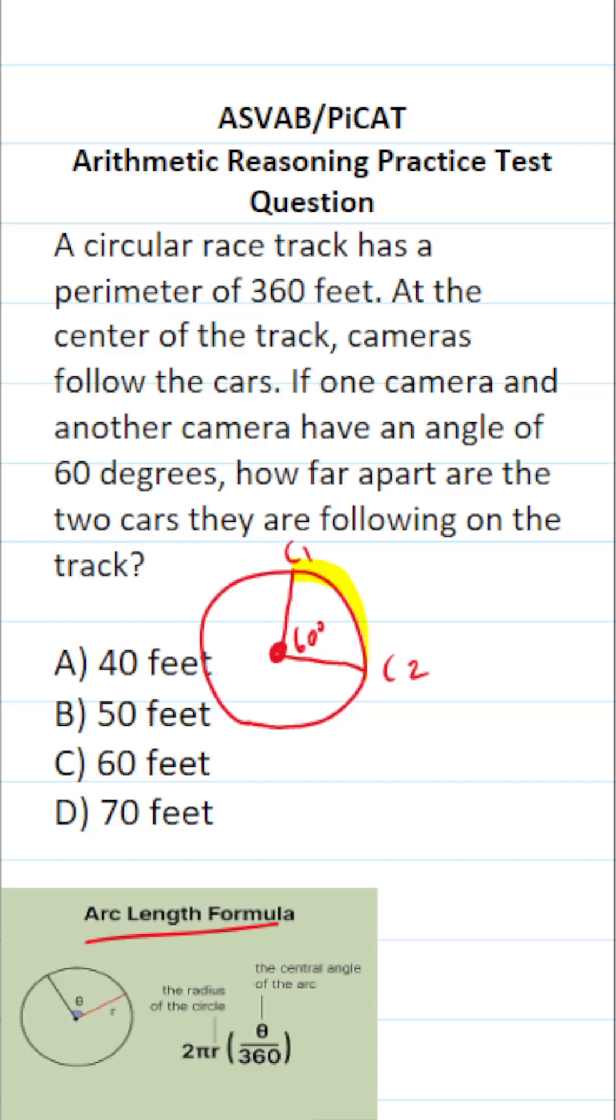Therefore, we're going to use the arc length formula to determine how far apart these two cars are. Let's take a look at this formula. It says 2πr times θ over 360. Well, what is 2πr? 2πr is the circumference of a circle.